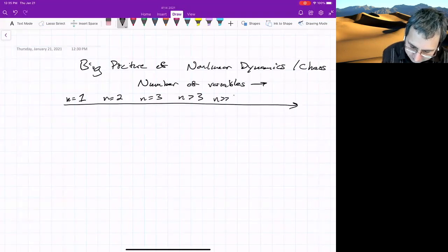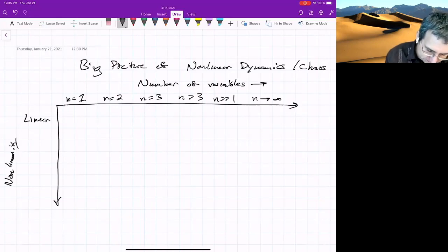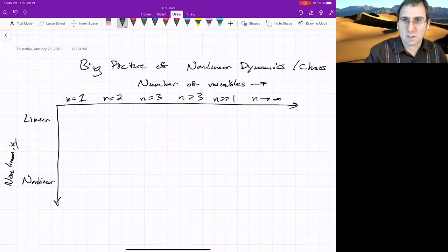And then much, much greater, and then infinite. And then along this axis, non-linearity, where up here we'll put linear, and down here, non-linear. So we can start populating what this is.